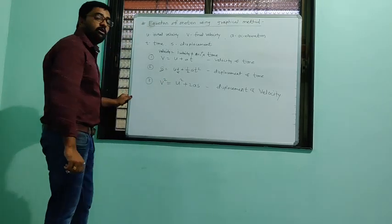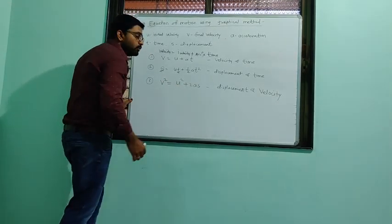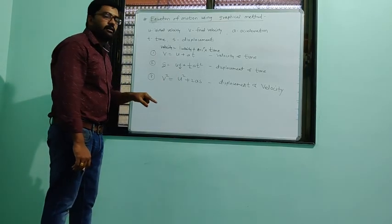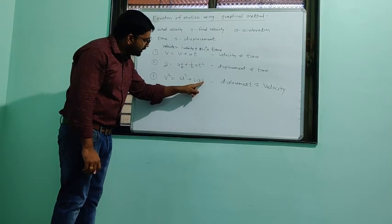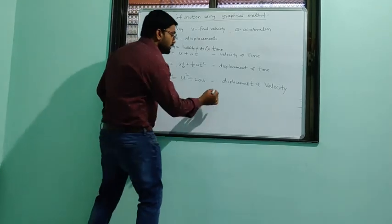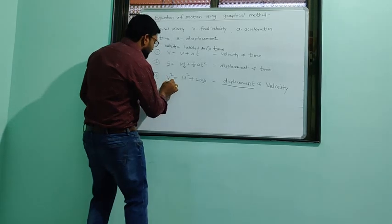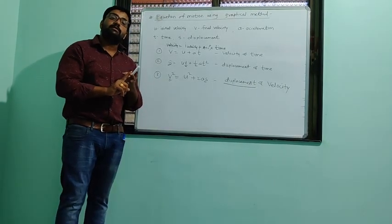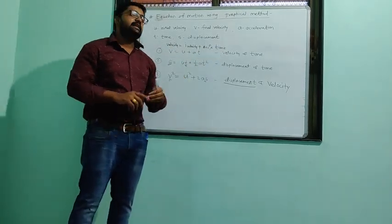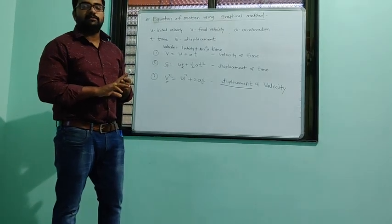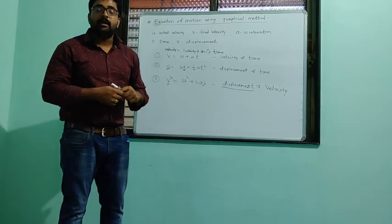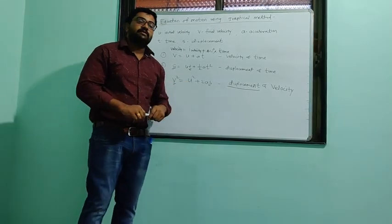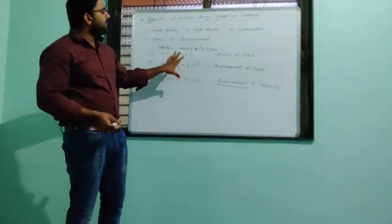The third equation: V² = U² + 2AS. V² is the square of velocity, U² is the square of initial velocity, A is acceleration, and S is displacement. This gives the relation between displacement and velocity — that is the third equation of motion.